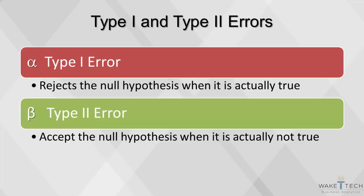Remember that a different sample can give a completely different result. A sample mean is likely to fall in the confidence interval only 95% of the time, so the inferences drawn from the sample may be wrong.